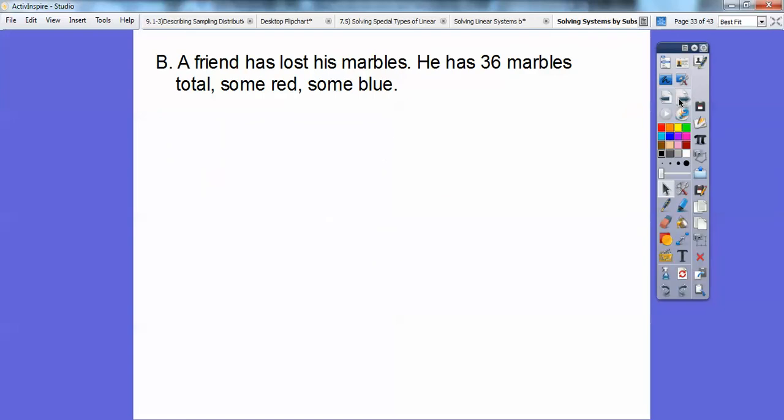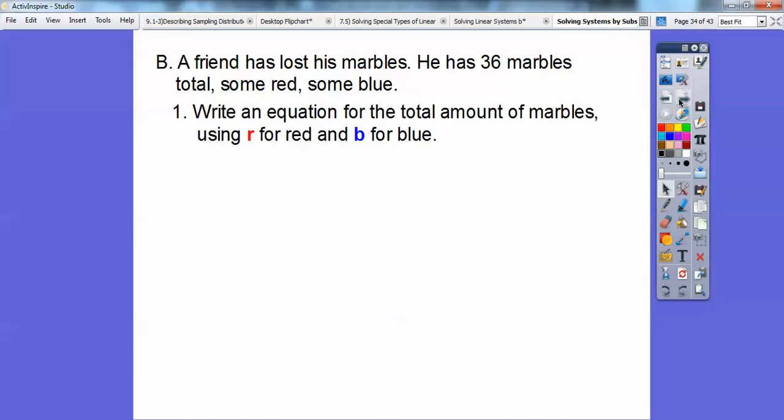Let's try this, you guys. A little problem solving here. A friend has lost his marbles. He has 36 marbles total, and some of them are red, some of them are blue. So our first equation is we're going to write an equation for the total amount of marbles using r for red and b for blue. So the number of red marbles plus the number of blue marbles has to equal the total right there, so 36. There's one equation right now.